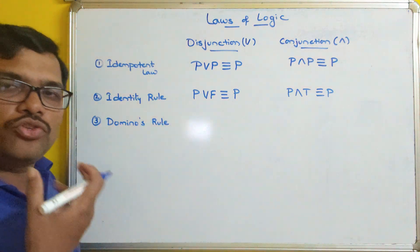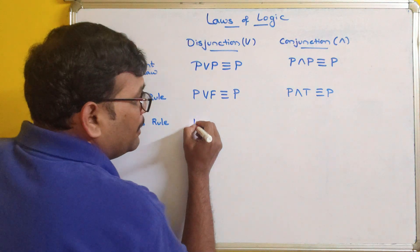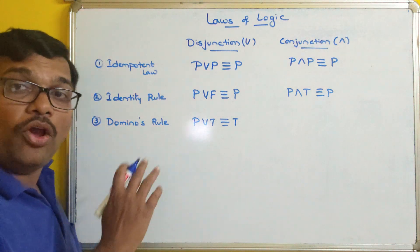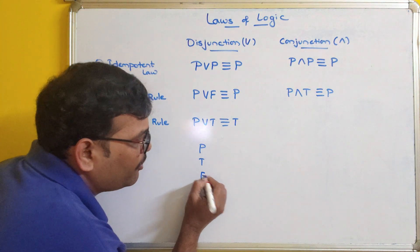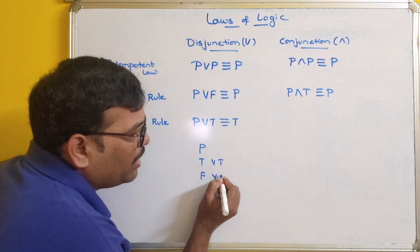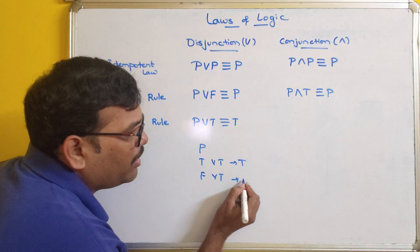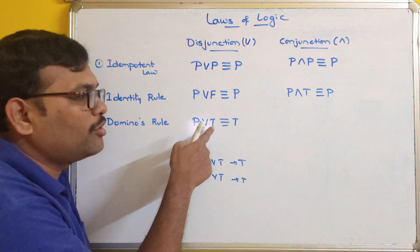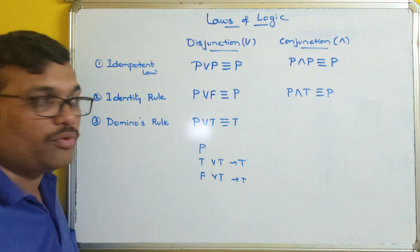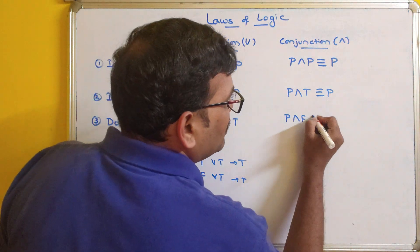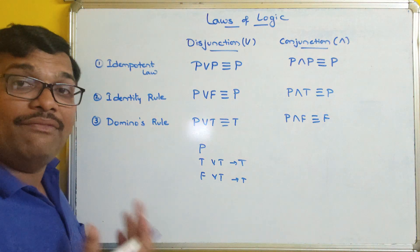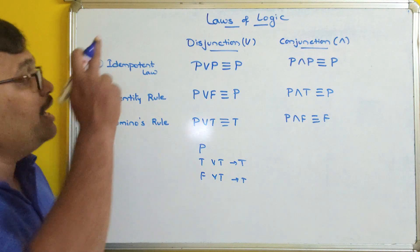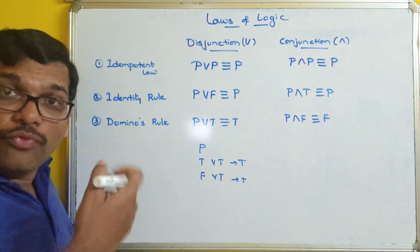The third law is the domination law. p∨T ≡ T: whether p is true or false, p∨true is always true. Similarly, p∧F ≡ F: p∧false always gives false. This kind of rule is called the domination law.